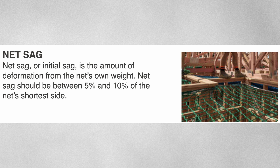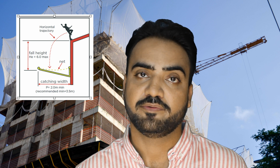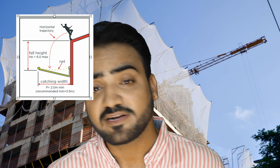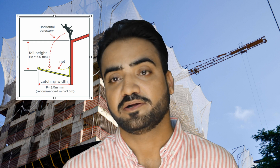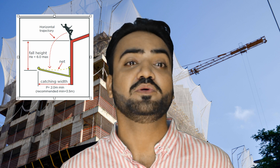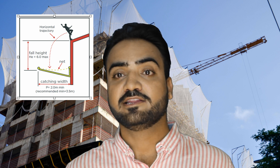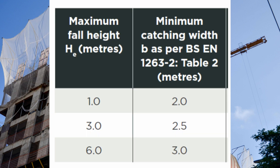Within 2 meters of the safety net outer edges, the full height between the work platform and the net should be no more than 3 meters, because safety nets cannot deflect as much at corners and edges. Net sag (initial shape) is the amount of deformation from the net's own weight; sag should be between 5% and 10% of the net's shortest side. The catching width is the width of the net between the edge of the work platform and the outer edge of the safety net — it must be wide enough to account for the falling person's forward movement.